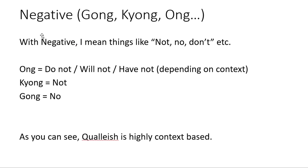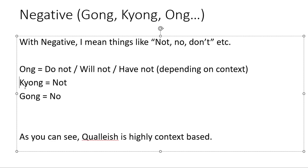Negatives — meaning things like NOT, NO, DON'T, et cetera. ONG equals DO NOT, WILL NOT, or HAVE NOT, depending on context. KYONG is NOT. HONG is NO. So to review: ONG, KYONG, HONG.